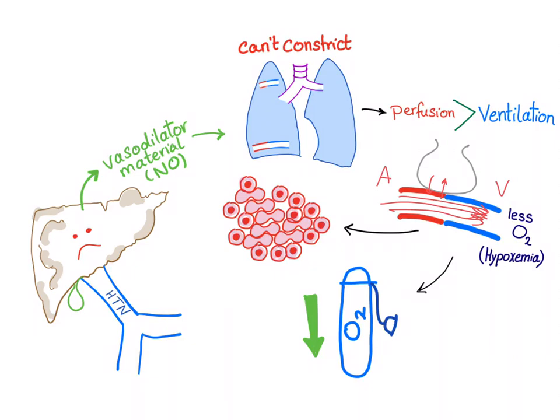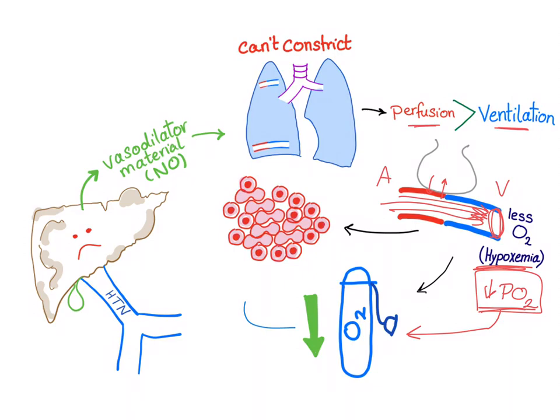Perfusion is more than ventilation — this is shunting, which leads to less oxygen going back to the heart. Less oxygen in the blood, i.e. hypoxemia, decreasing the PO2. This hypoxemia will lead to hypoxia. And the response to hypoxia through the kidney producing a hormone called EPO is absolute erythrocytosis.